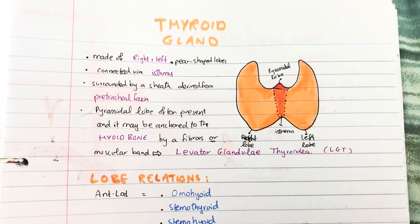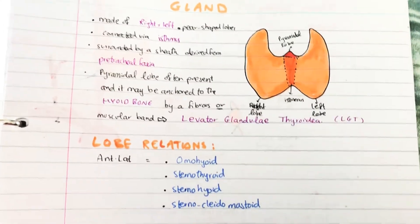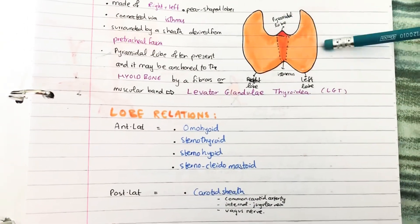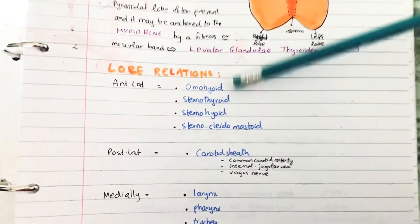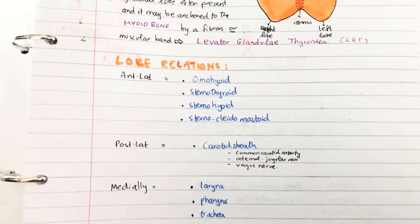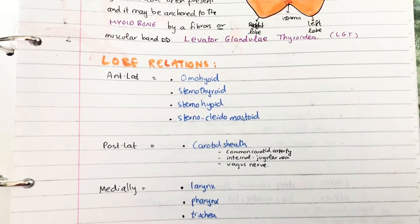This is just overview information. What's important are the relationships of the lobes from an exam point of view. I don't know what you guys are tested on, but we're tested on this, so I'm going to be focusing on this.